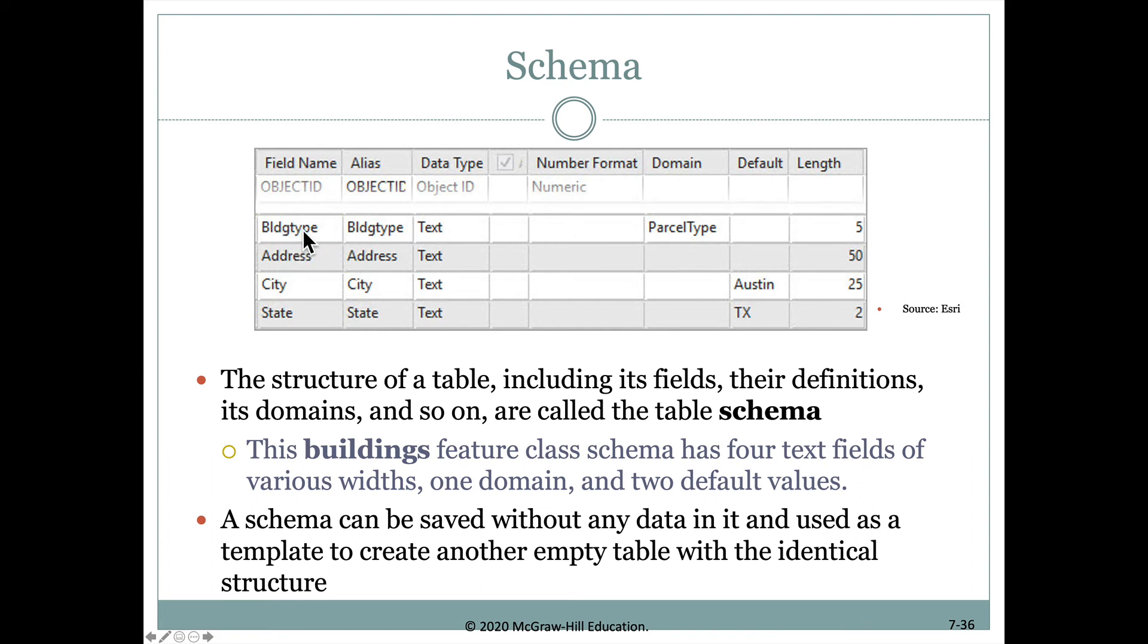In this schema example, we're seeing the building type, which is type text. It has a domain which is parcel type, so they'll have a nice drop-down to indicate what parcel type they need. We can see the length here. The address is text and has a length of 50.